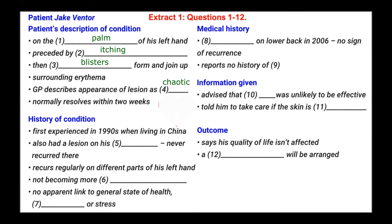The next question is: also had a lesion on his blank, never occurred there. We can understand that somewhere else a lesion appeared just once and never again. The patient says he first got it when he was in China in the 1990s, and at that time he also had a similar sore on his chest, but that's never come back. So the answer to number five is: lesion on his chest.